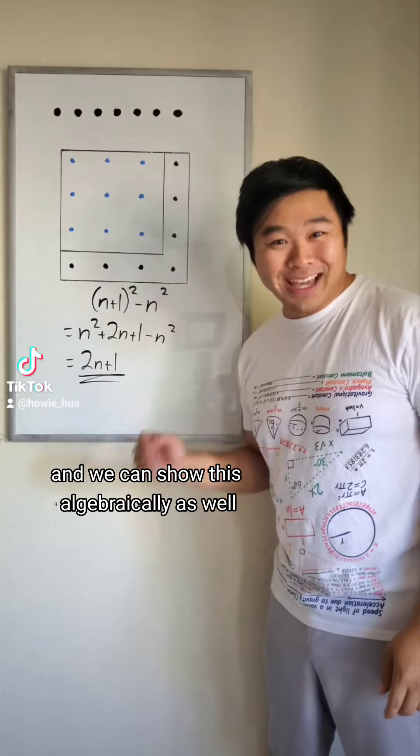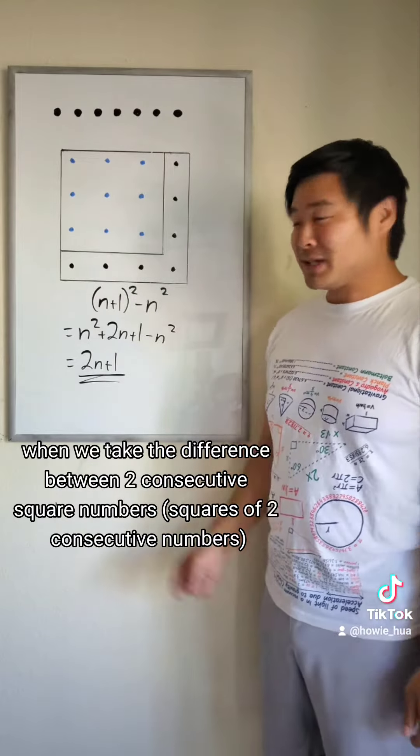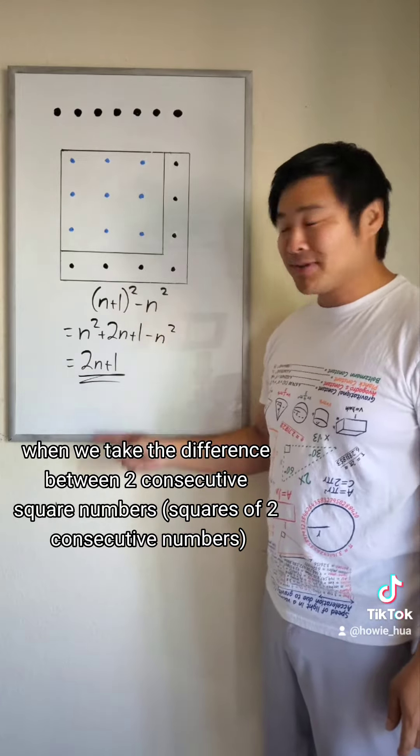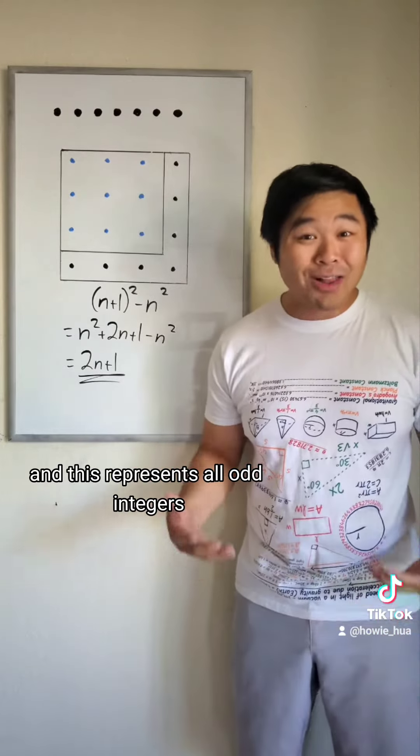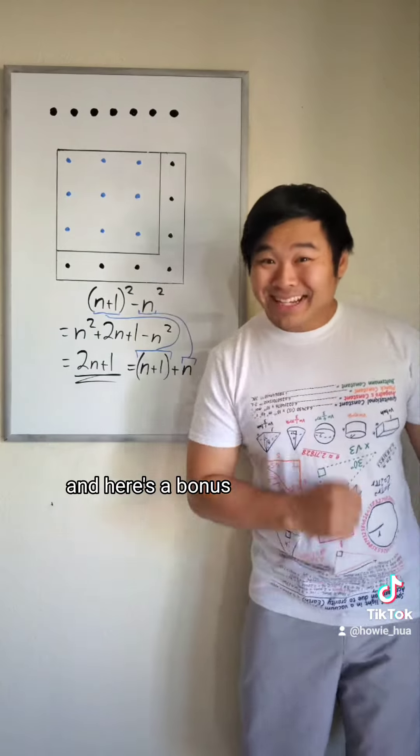And we can show this algebraically as well. When we take the difference between two consecutive square numbers, we get 2n plus 1 where n is an integer. And this represents all odd integers. And here's a bonus.